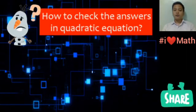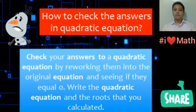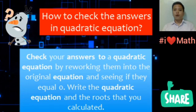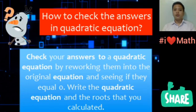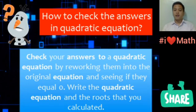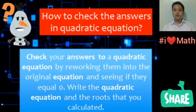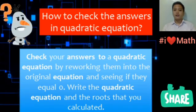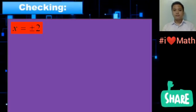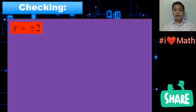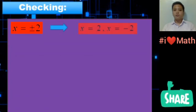How to check the answers in a quadratic equation? Check your answers by reworking them into the original equation and see if it equals 0. Write the quadratic equation and the roots that you calculated. This is our answer in example 1 — it can also be written as x = 2 and x = -2.